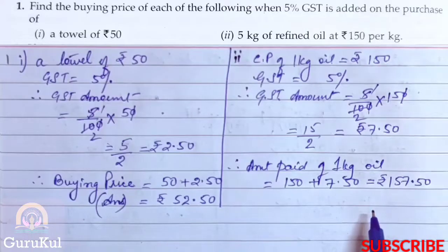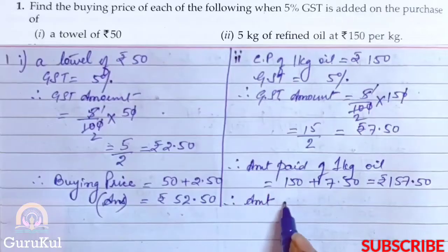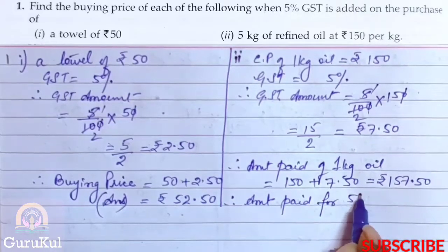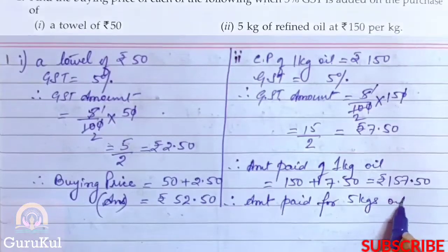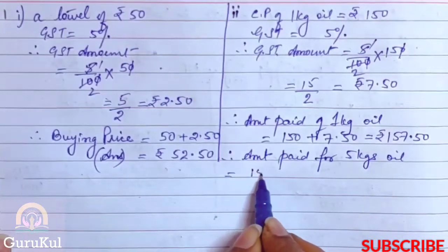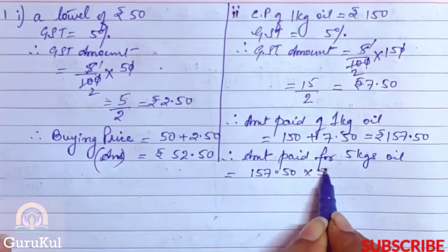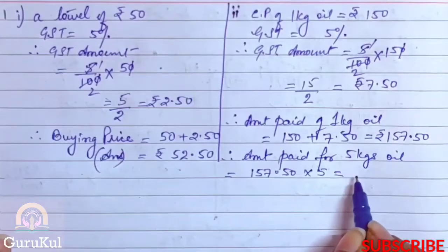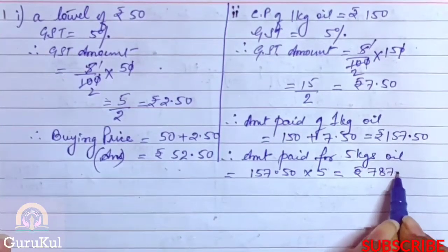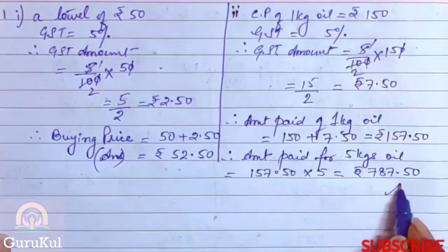We need to find the buying price of 5 kg of refined oil. Therefore the amount paid for 5 kg of oil is ₹157.50 × 5 = ₹787.50. This is the answer.